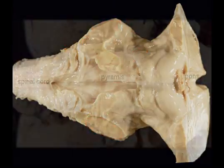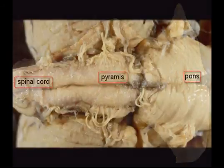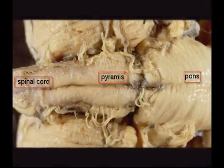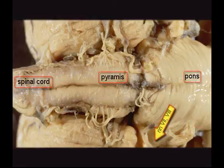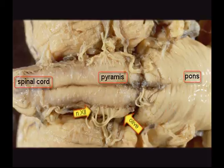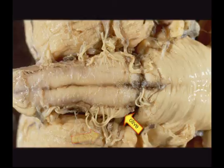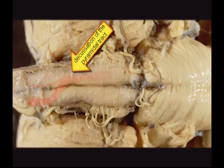On the ventral aspect of the brainstem a number of cranial nerve roots are visible: the trigeminal nerve root that emerges from the pons, the abducent nerve, the facial and vestibulocochlear nerve, and then ventral to the olive, the hypoglossal nerve, and dorsally the ninth, the tenth, and the cranial root of the eleventh cranial nerve. Please note that the decussation of the pyramidal tract is incomplete.